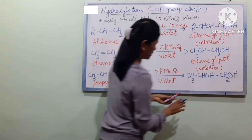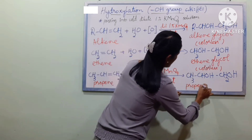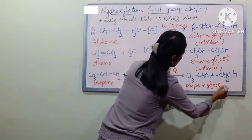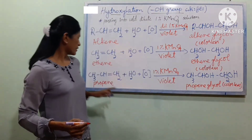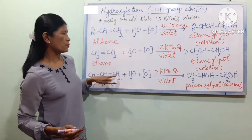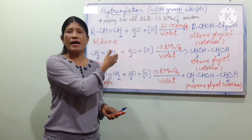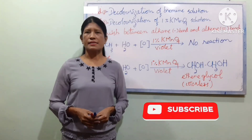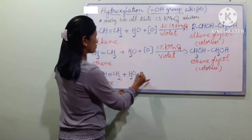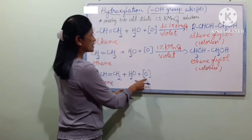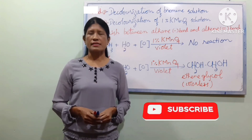CH3CH(OH)CH2OH — propylene glycol is the product. It is called colorless. The equation involves the alkene reacting to form propylene glycol. See you next lesson, bye bye.